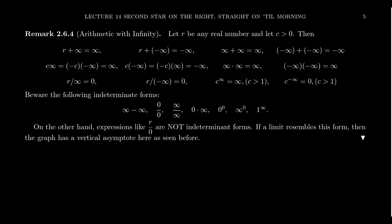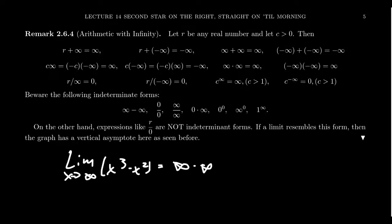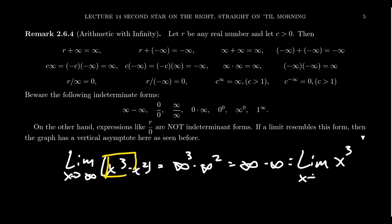Let me give you an example. If you take the limit as x approaches infinity of x cubed minus x squared, this looks like infinity minus infinity — naively plugging in gives infinity cubed minus infinity squared, which becomes infinity minus infinity. But because of the leading term being x cubed, it should just be the limit of x cubed as x approaches infinity, which is infinity. So in this case, infinity minus infinity turns out to be infinity.